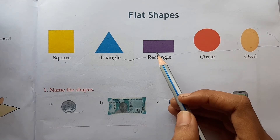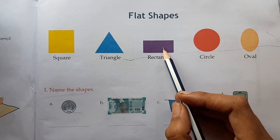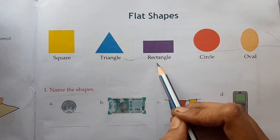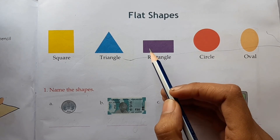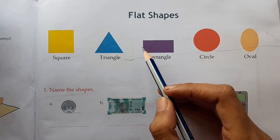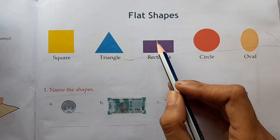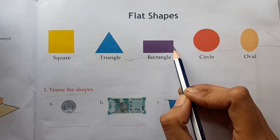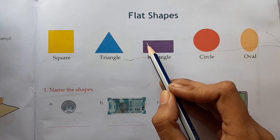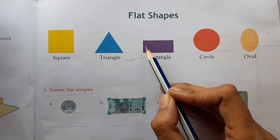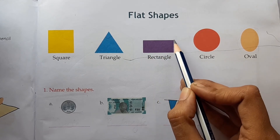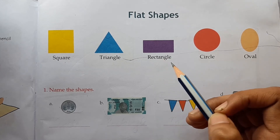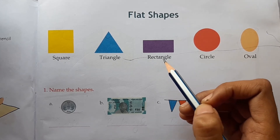Our next shape is this one. This is the shape of a rectangle. A rectangle also has four sides — one, two, three and four. And it also has four corners — one, two, three and four. So rectangle also has four sides and four corners.